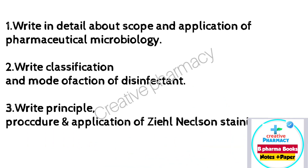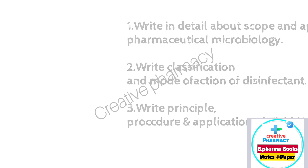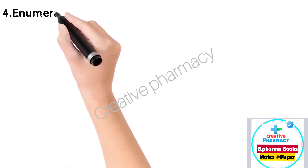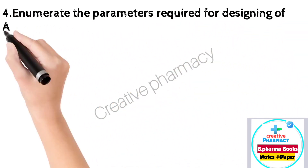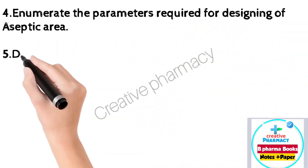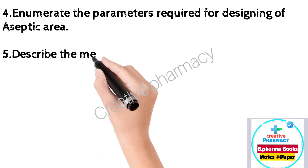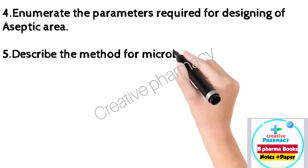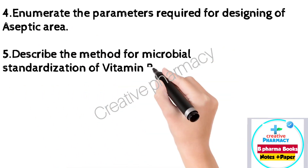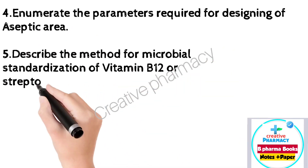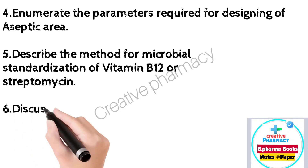In sare questions ke 3 to 4 page ke answer likhen. Char: enumerate the parameters required for designing of aseptic area. 5: describe the method for microbial standardization of vitamin or streptomycin.